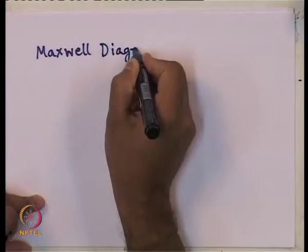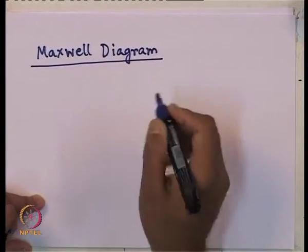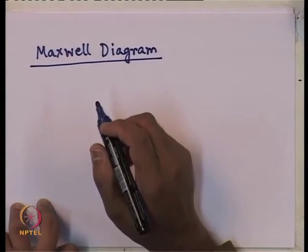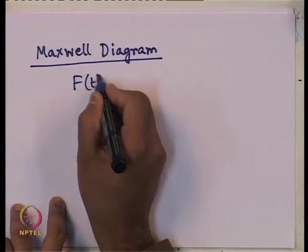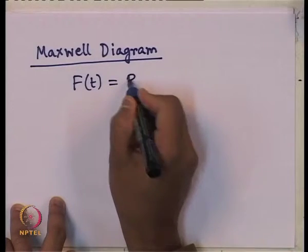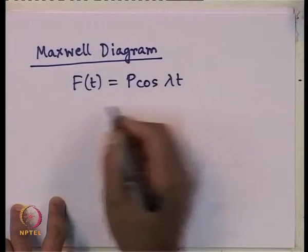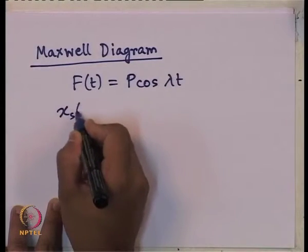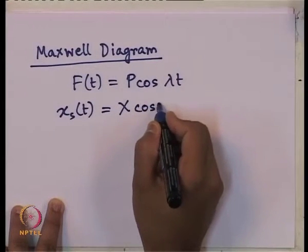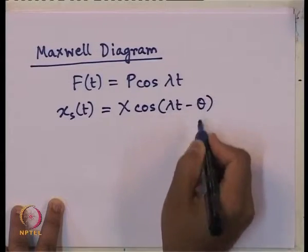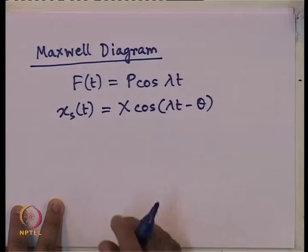So using the Maxwell diagram, we can again prove mathematically which zone is controlled by which parameter. We have f(t) equals p cosine of lambda t, and for which we got the steady state response x(t) equals x cosine of lambda t minus theta. That was the form of the solution — a cosine function.